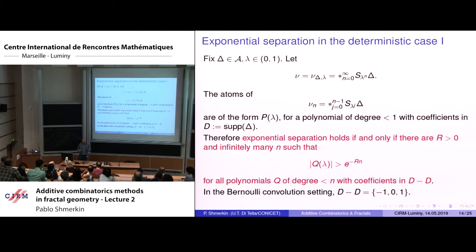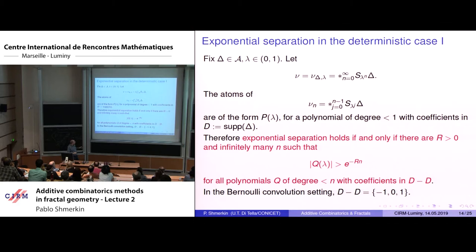Now let's go to the other application: smoothness of Bernoulli convolutions. This corresponds to the case where there is no group and no dynamics — there is a fixed atomic measure delta. Exponential separation in this setting: the atoms of the finite approximations are polynomials p(lambda) where p is a polynomial of degree at most n-1 with coefficients in the support of delta. To check exponential separation we look at the distance between atoms, which is a polynomial in lambda with coefficients in D - D.